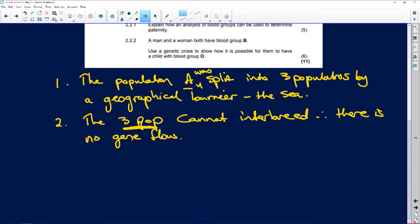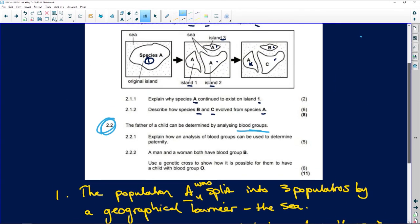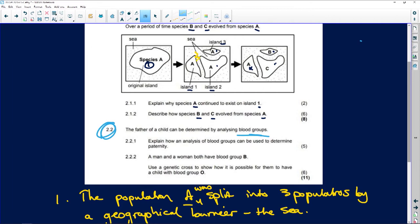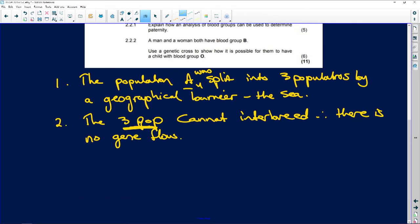In other words, what that means is if we go back to our diagram, once they split, remember, these animals can't get to each other. There is no gene flow, they are not mating with them. They can't get to each other. Cannot interbreed, there is no gene flow, very, very important.